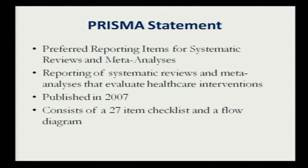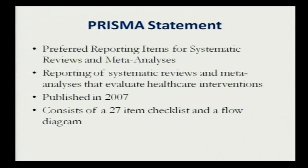The PRISMA statement — Preferred Reporting Items for Systematic Reviews and Meta-Analysis — is something you should be aware of. It consists of a 27-item checklist and a flow diagram specifying all steps that should have been followed before a systematic review was completed. Whenever you read a published systematic review, you should check it against PRISMA to confirm all steps were followed. If a number of steps are omitted, it is probably not true level-one evidence, even if it calls itself a systematic review.